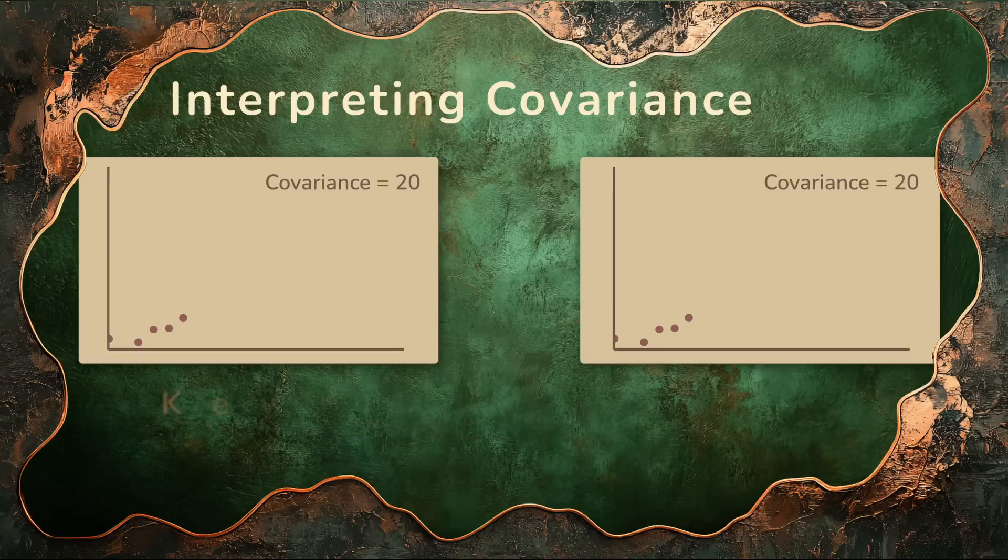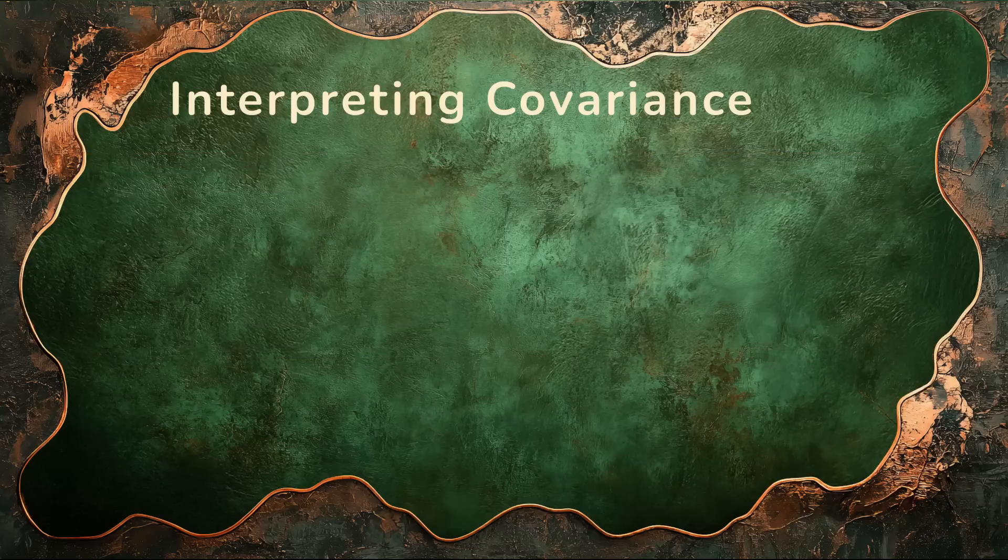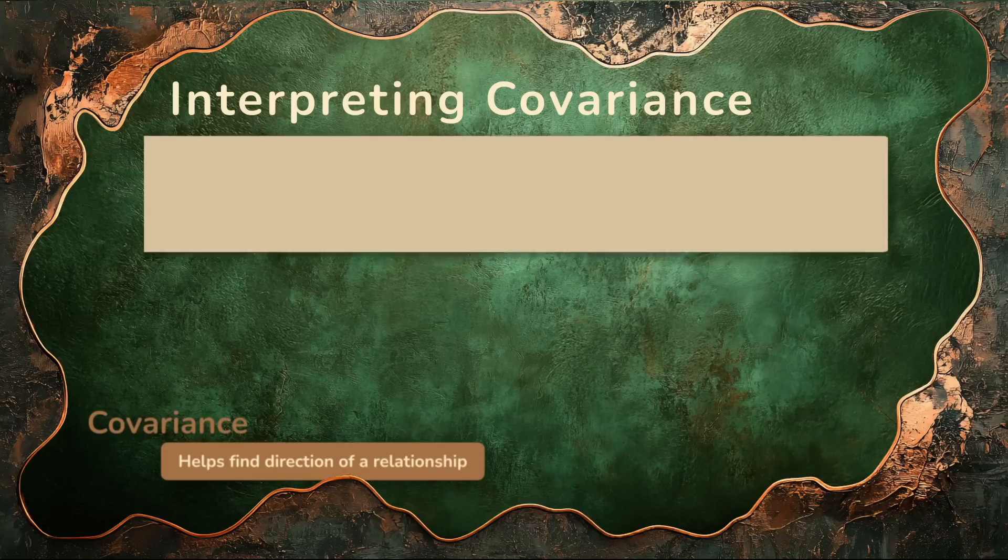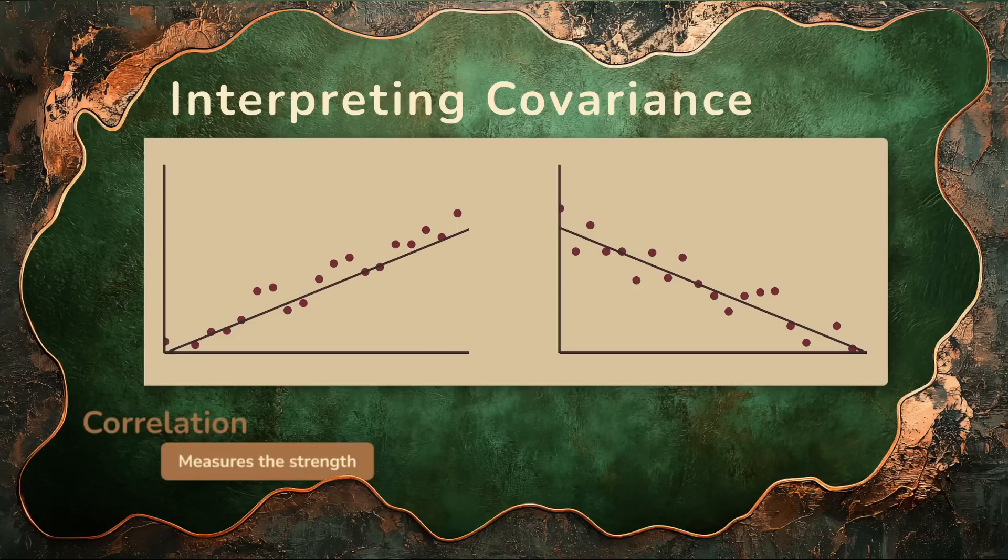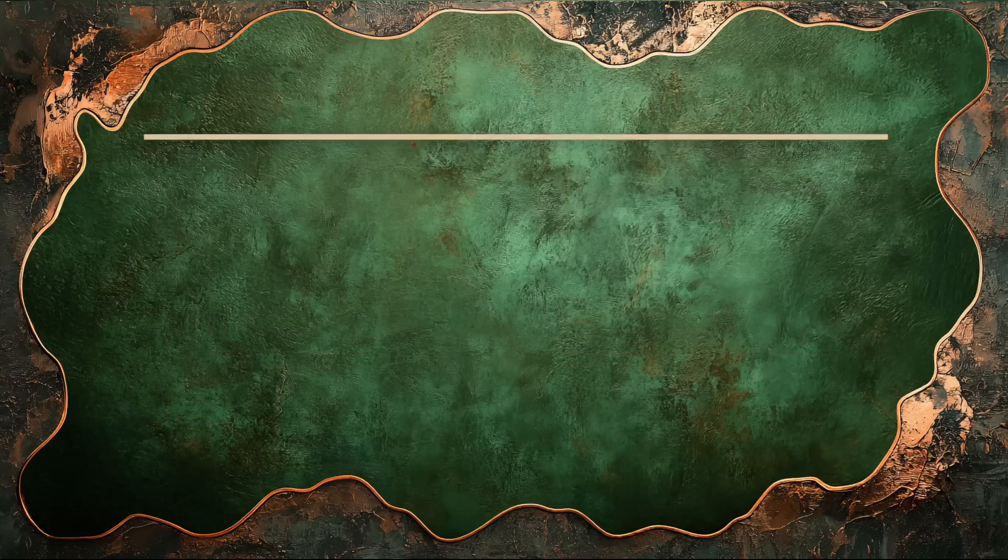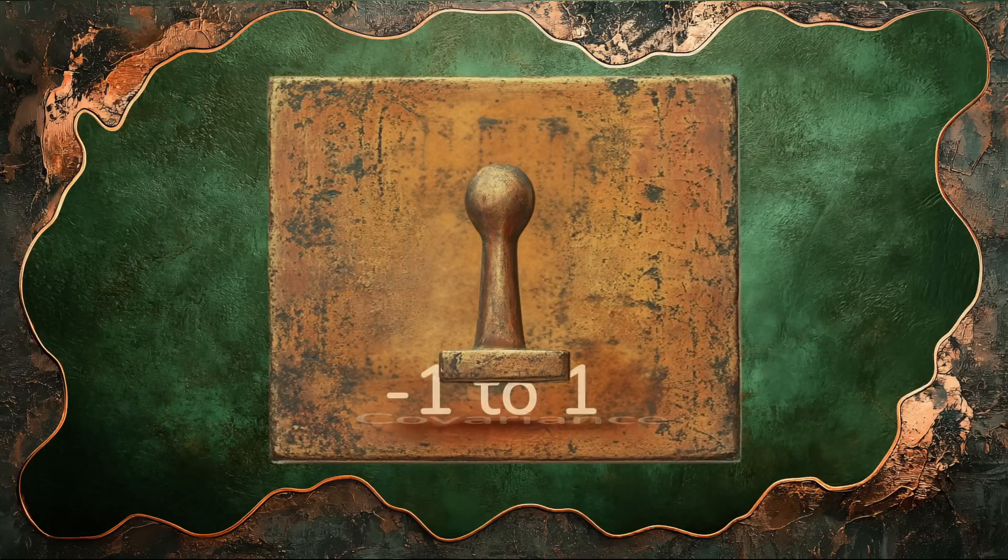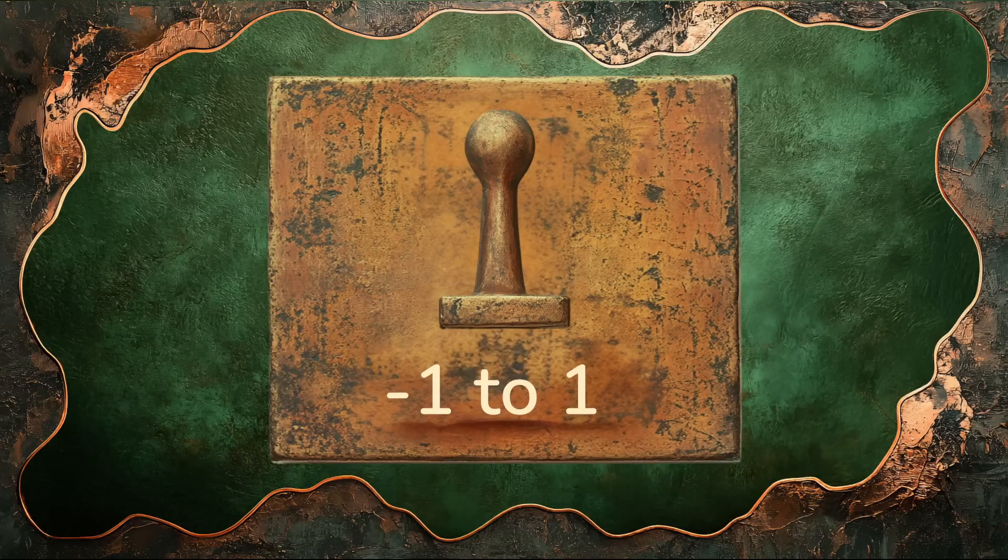A covariance of 20 might be huge in one context, tiny in another. This makes covariance great for detecting the direction of a relationship, positive or negative, but not so great for comparing the strength of different relationships. That's where correlation comes in. It takes the covariance and normalizes it, squashes it down into a number between negative 1 and 1. But we'll save that story for another video.